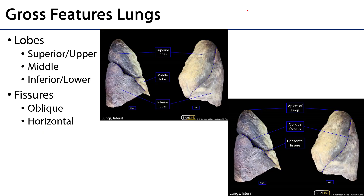In terms of gross features, lungs consist of lobes. Typically the right lung has three lobes: a superior or upper lobe, a middle, and an inferior or lower lobe. Whereas the left lung typically only has two lobes, a superior and an inferior — so there's no middle lobe for the left lung. These lobes are separated by fissures, and it's into these fissures that the visceral pleurae dive deep to help separate these lobes.